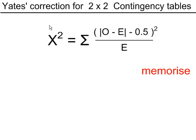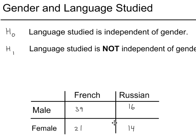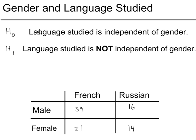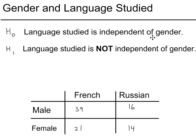So memorize this formula. It's not given to you in the formula book. Okay, we have a table here with observed values, O values. And what we have is gender and language studied. So H0: language studied is independent of gender. H1: language studied is not independent of gender.